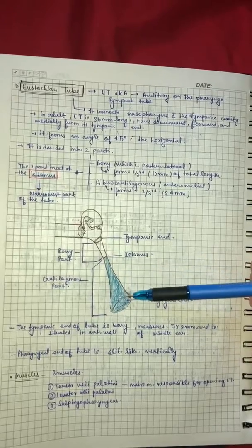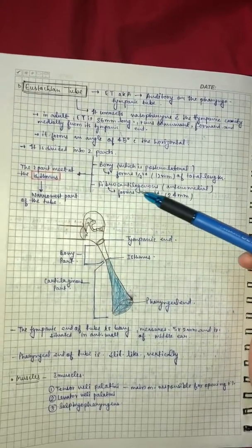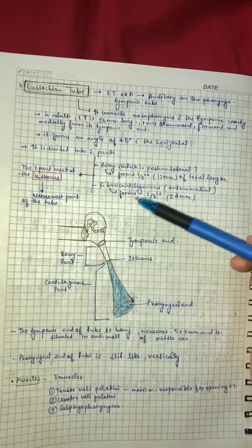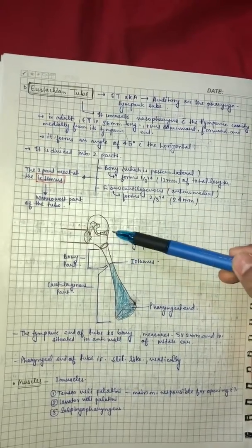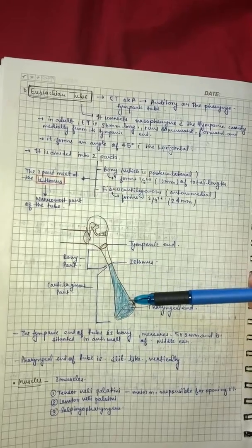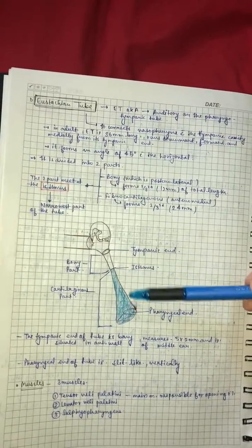Then the other part, two-third part of Eustachian tube, that is known as fibrocartilaginous. Made up of fibrocartilaginous which is anteromedial, anteriorly medial side, and it forms two-thirds, that is 24mm.